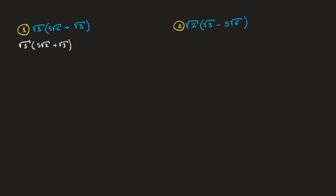To do this we distribute the square root of 3 across the parentheses in the usual way. That's equal to the square root of 3 times 5 times the square root of 2, plus the square root of 3 times the square root of 3.